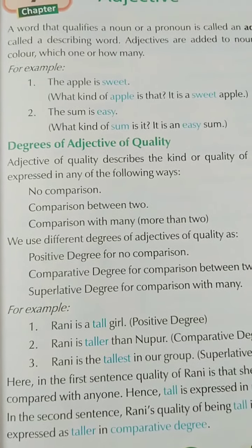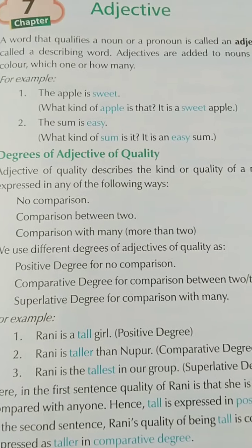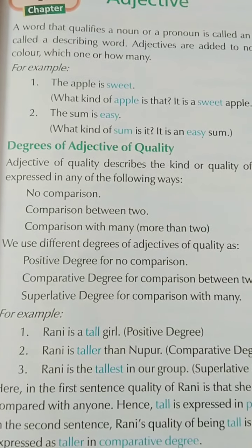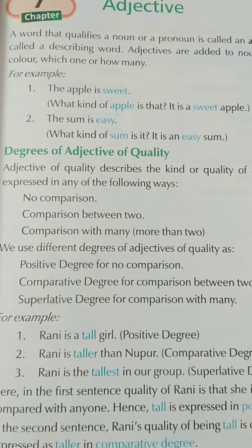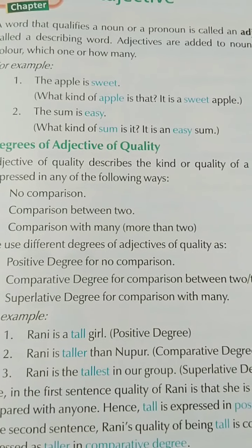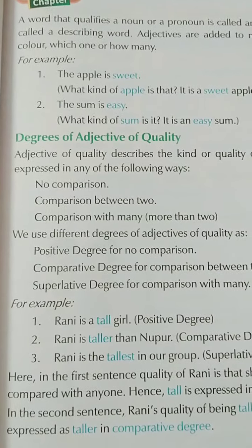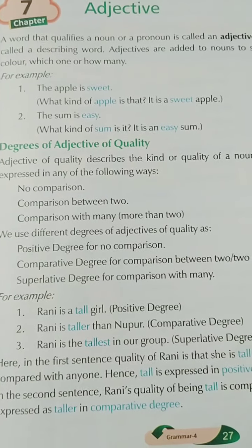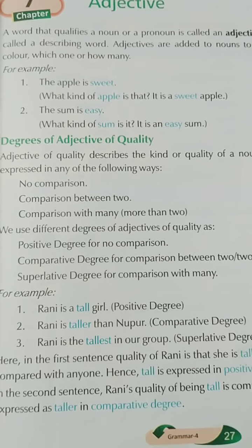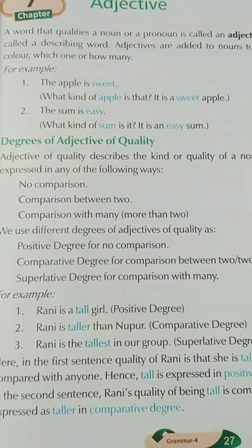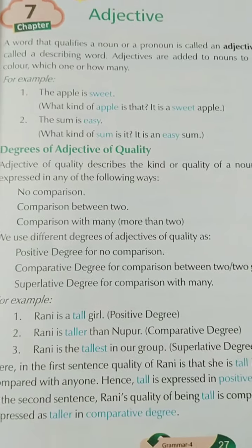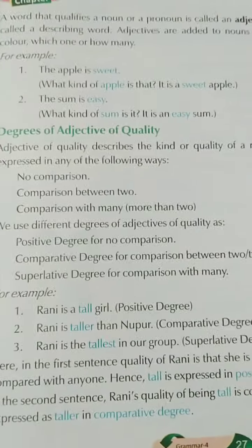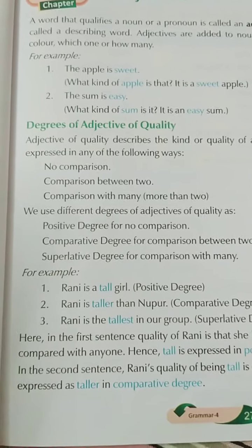The positive degree does not compare anything. The comparative degree compares between two — for example, if there are two sisters and you say 'Gita is taller than her sister.' The superlative degree is used when there are three or more — for example, 'Gita is the tallest among all.' Rani is a tall girl — positive degree. Rani is taller than Nupur — comparative degree. Rani is the tallest in our group — superlative degree.